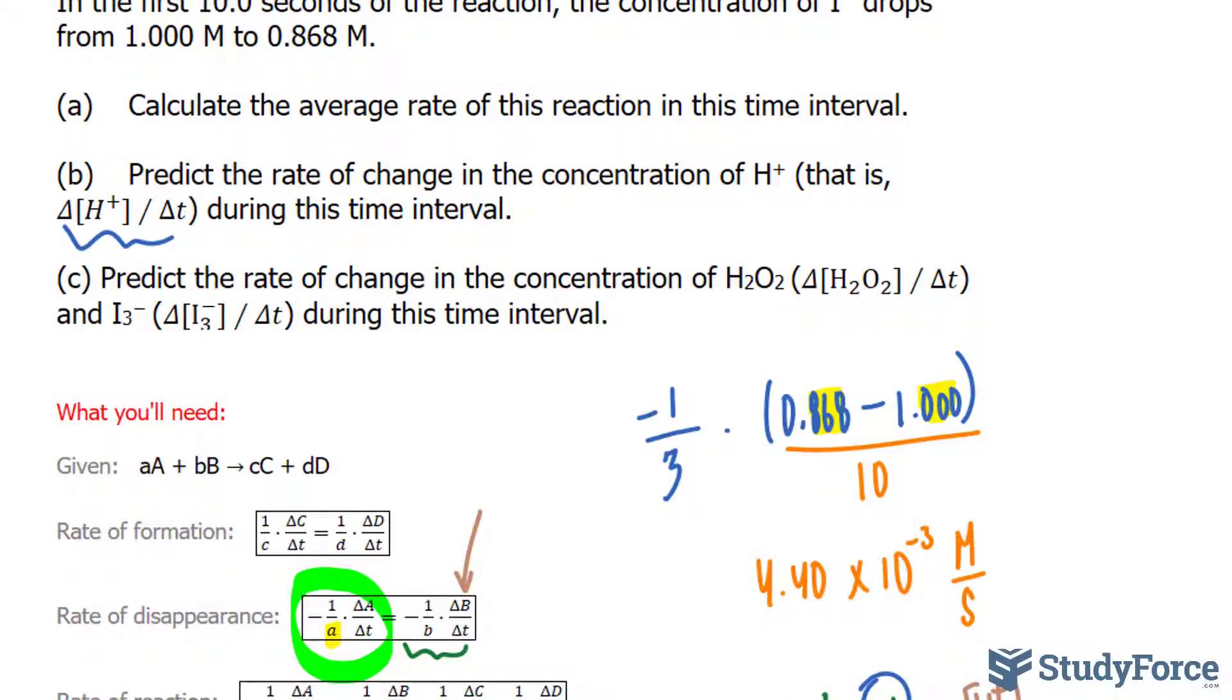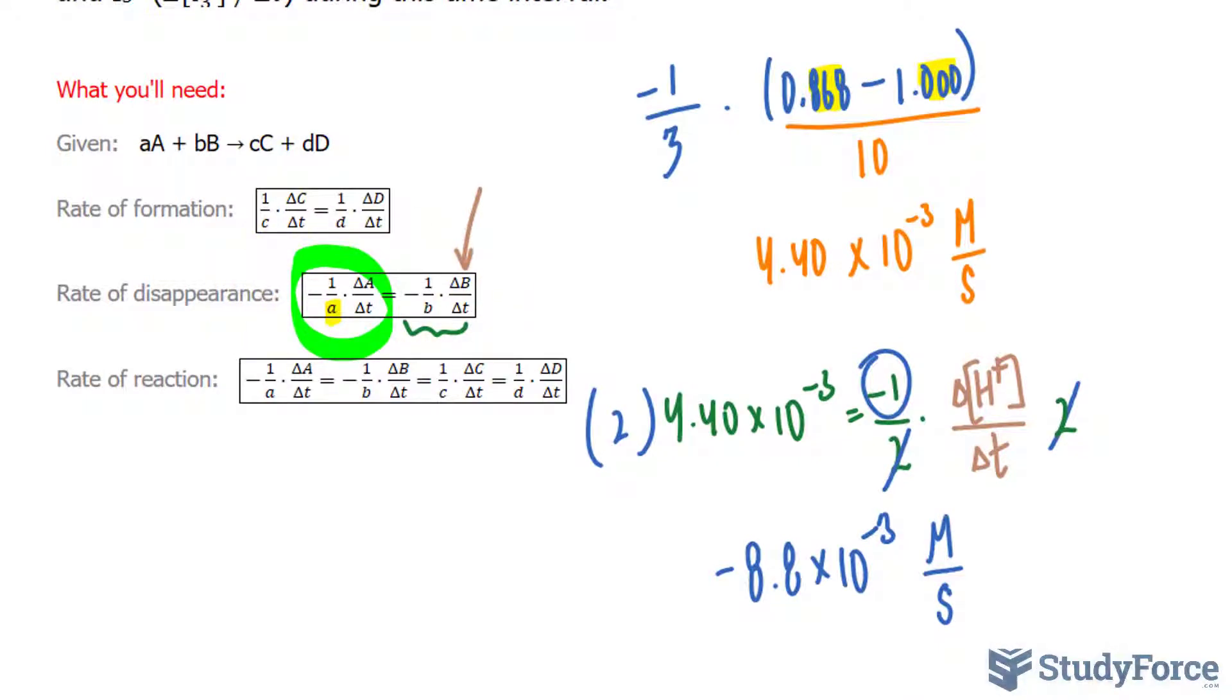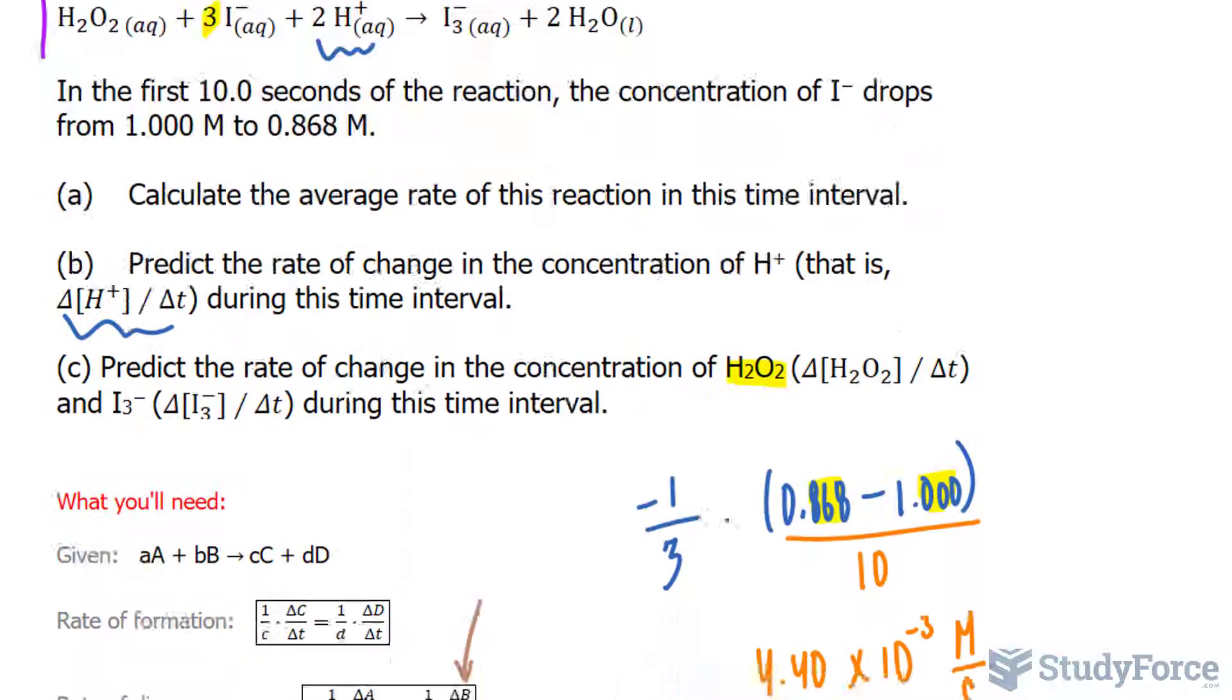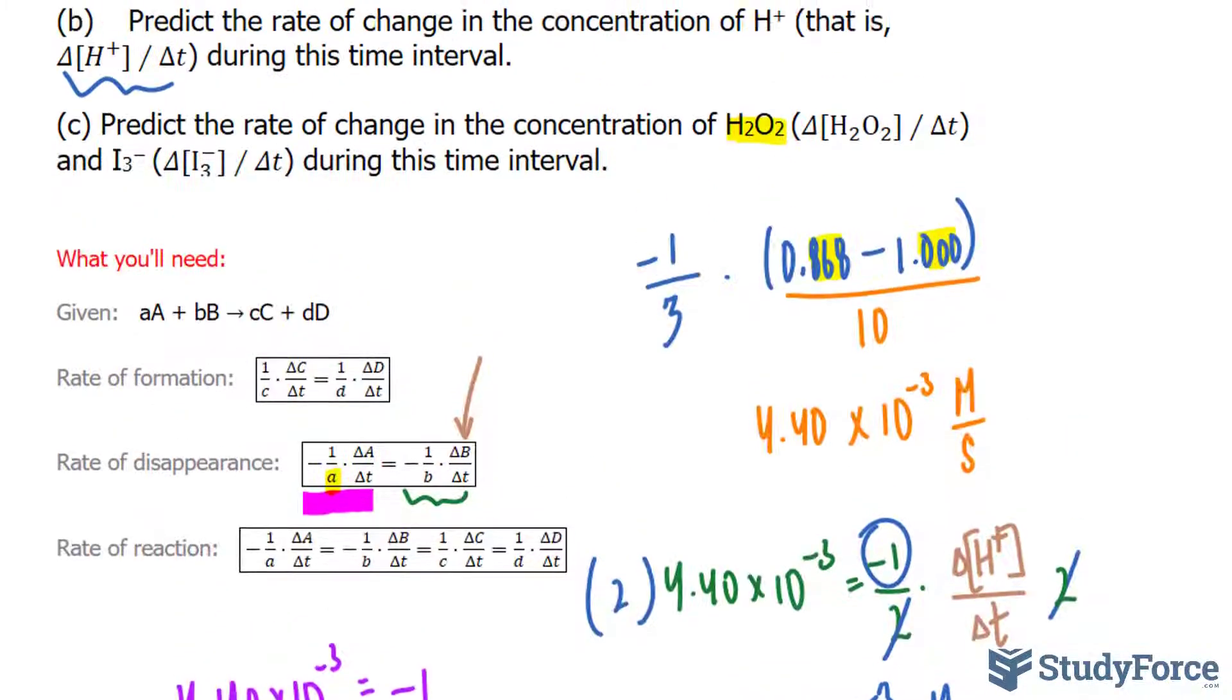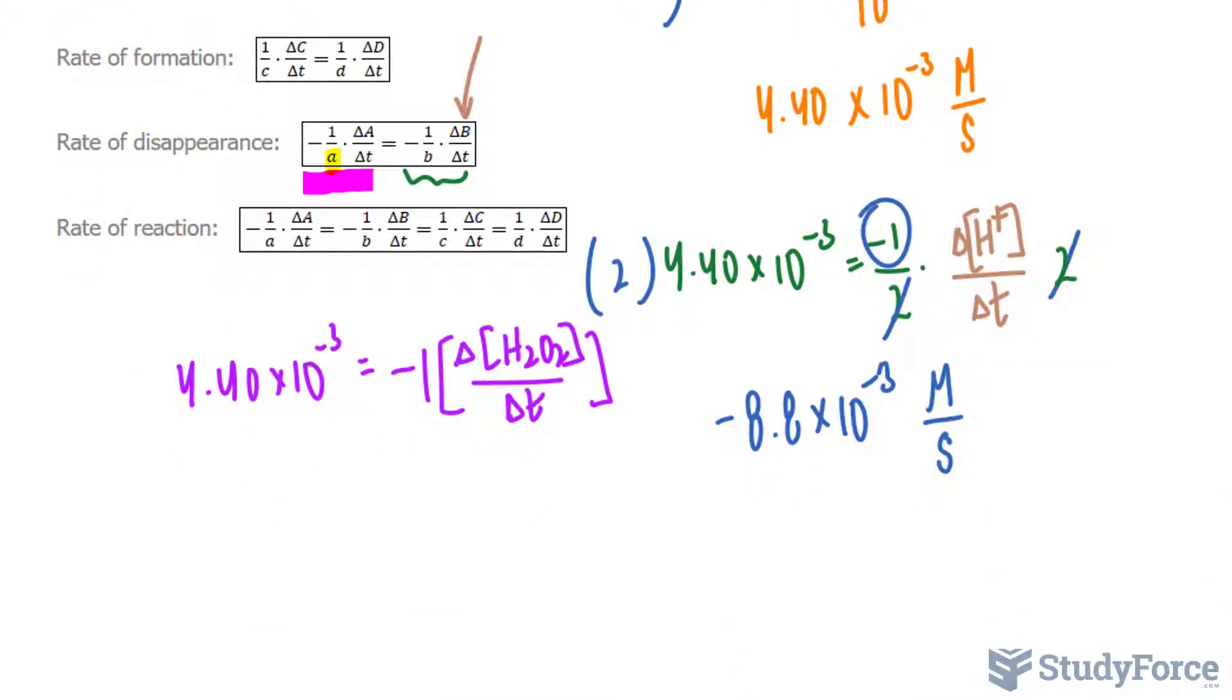Finally, for question C, we have to predict the rate of change in the concentration of peroxide and triiodide during this time interval. That's not a problem. For peroxide, we can use the same relationship that we had here, the rate of disappearance. So what I'll do is write down this expression. And once again, that will represent this part, the left side of the rate of disappearance. And that is equal to negative 1 over, we have a 1 in front, so we have negative 1. And we're looking for the concentration of hydrogen peroxide per the time difference. This one is easy, I divide both sides by negative 1 and I end up with negative 4.40 times 10 to the power of negative 3 molars per second. That represents this.